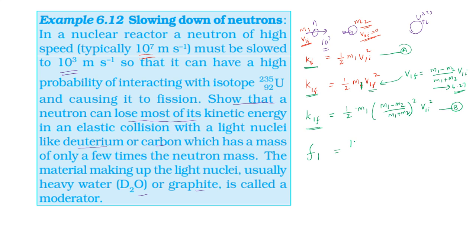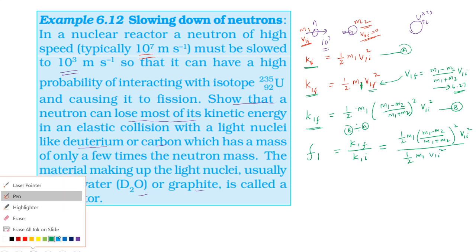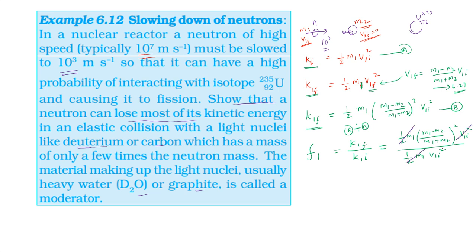The fraction of kinetic energy retained by the first particle equals the final kinetic energy of M1 divided by its initial kinetic energy. This equals [(M1 − M2) / (M1 + M2)]² × V1i² divided by the initial kinetic energy of M1 × V1i², which simplifies to [(M1 − M2) / (M1 + M2)]².